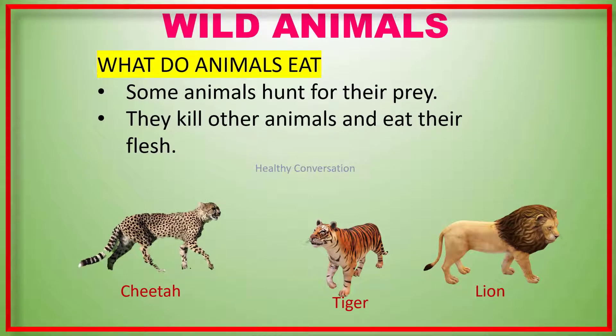Some animals hunt for their prey. They kill other animals and eat their flesh. These animals are known as carnivores. Cheetah, tiger, and lion are carnivores.